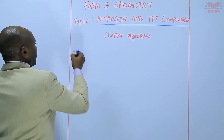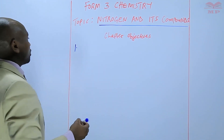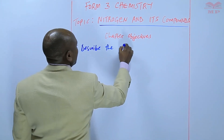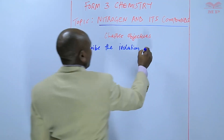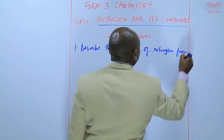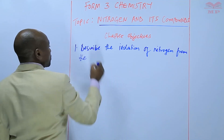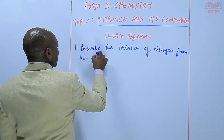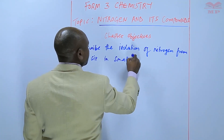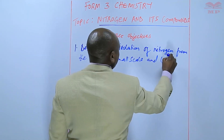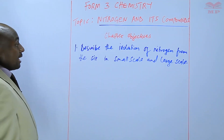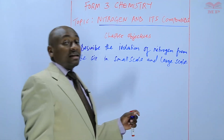In this topic, the learner is expected to describe the isolation of nitrogen from the air — to describe the process of isolating nitrogen from the air in small scale and large scale. A small scale is like in the lab, and the large scale is in an industrial setup.